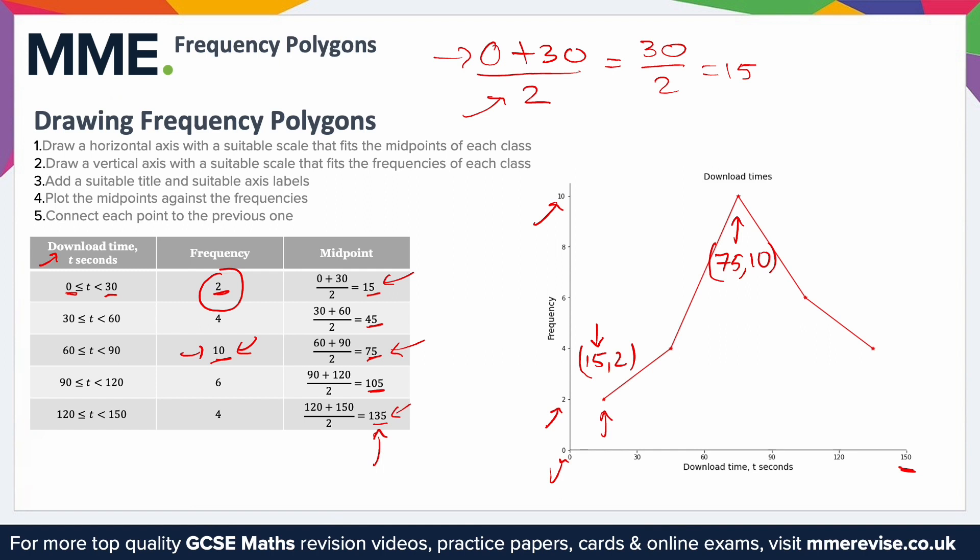You'll notice here as well, I have not connected the first point to the last like this. You shouldn't do that. The frequency polygon should not be closed. You may occasionally get problems where it says, here's a frequency polygon, identify some issues. If it's closed like that, that is an issue. It should not be closed.